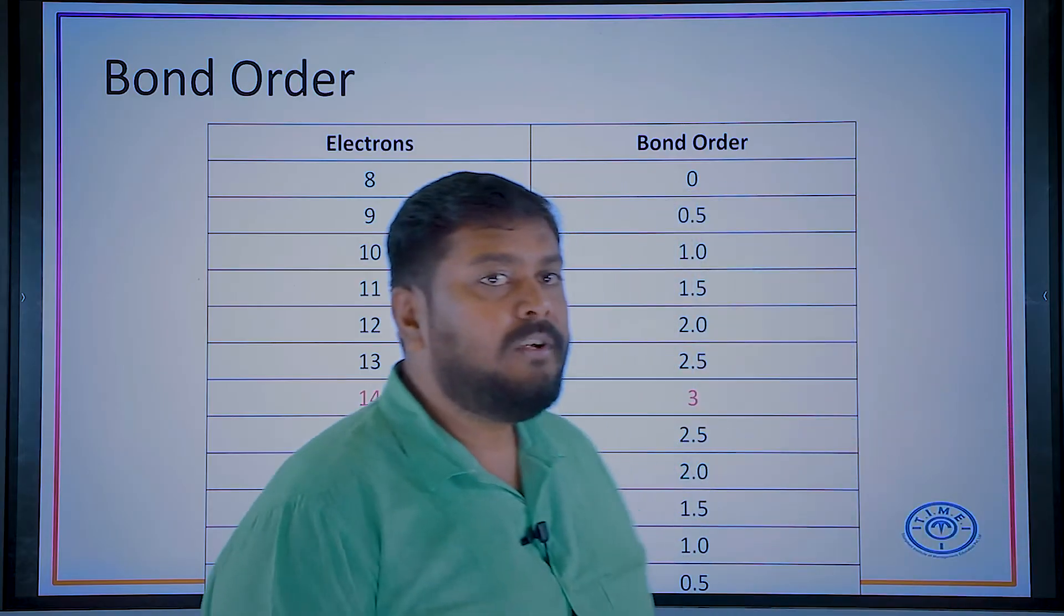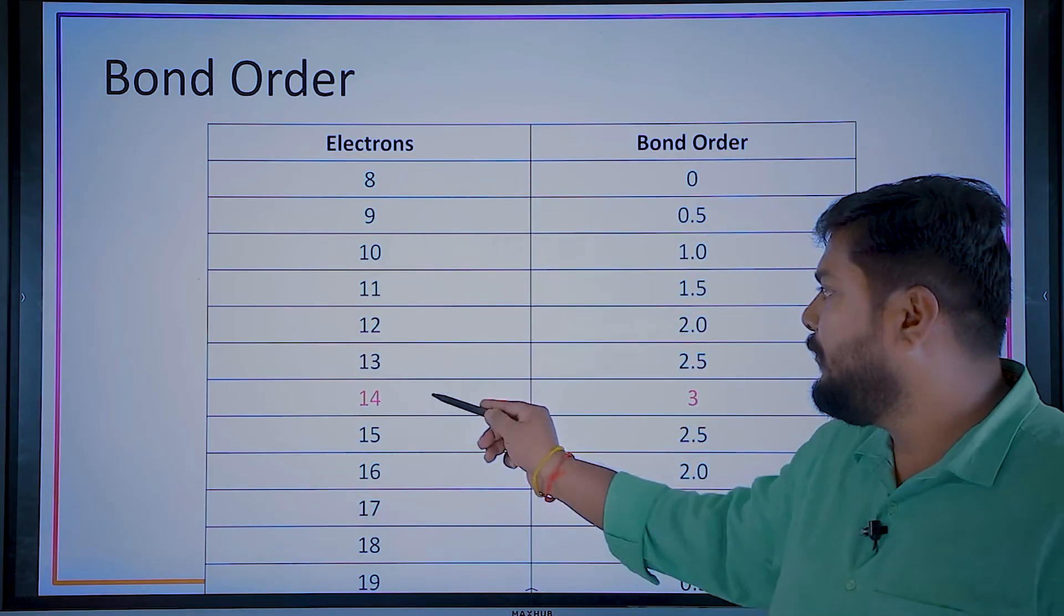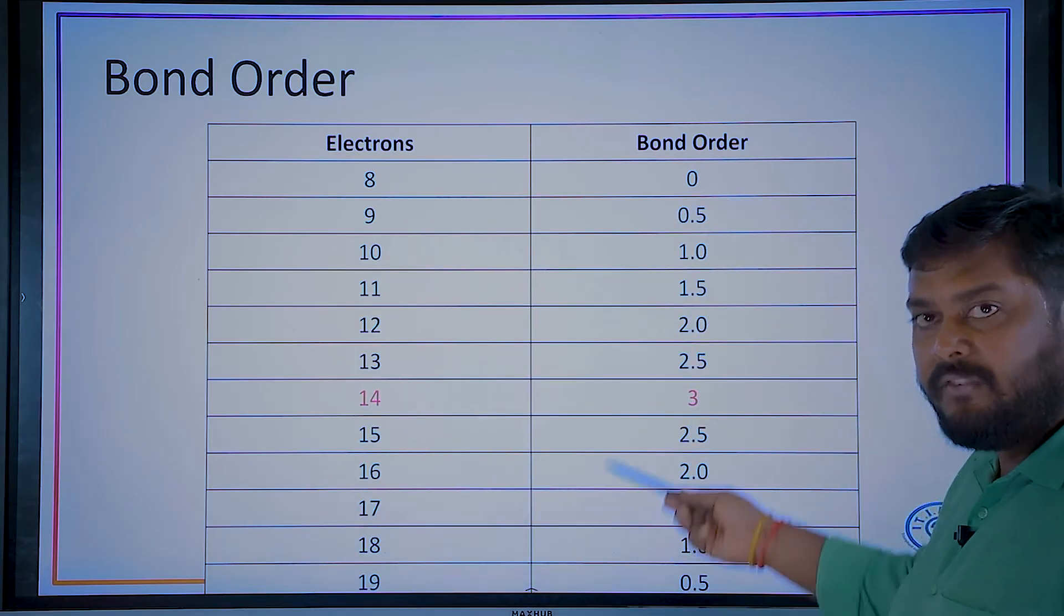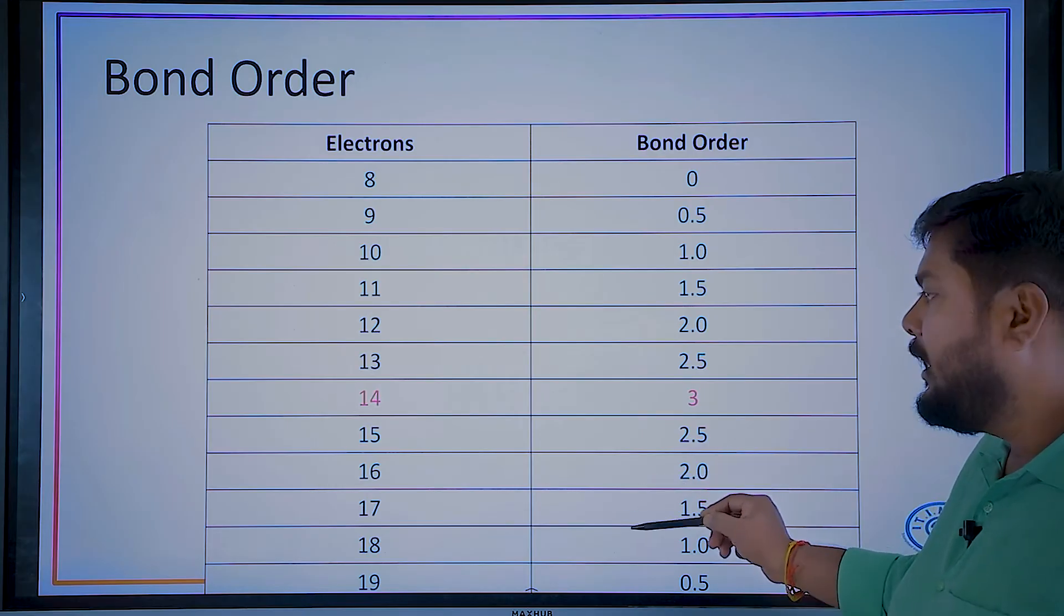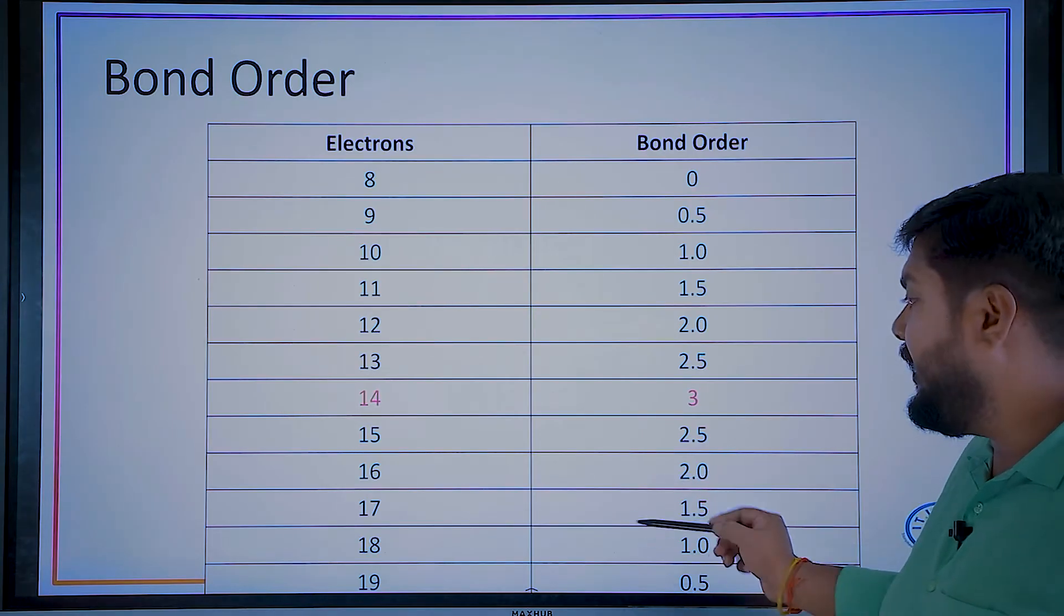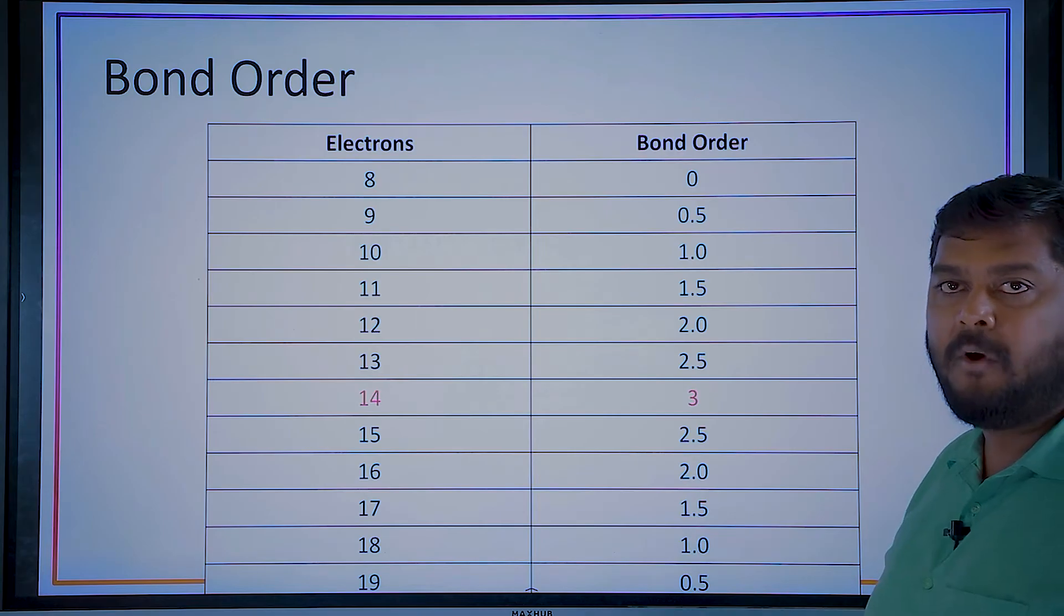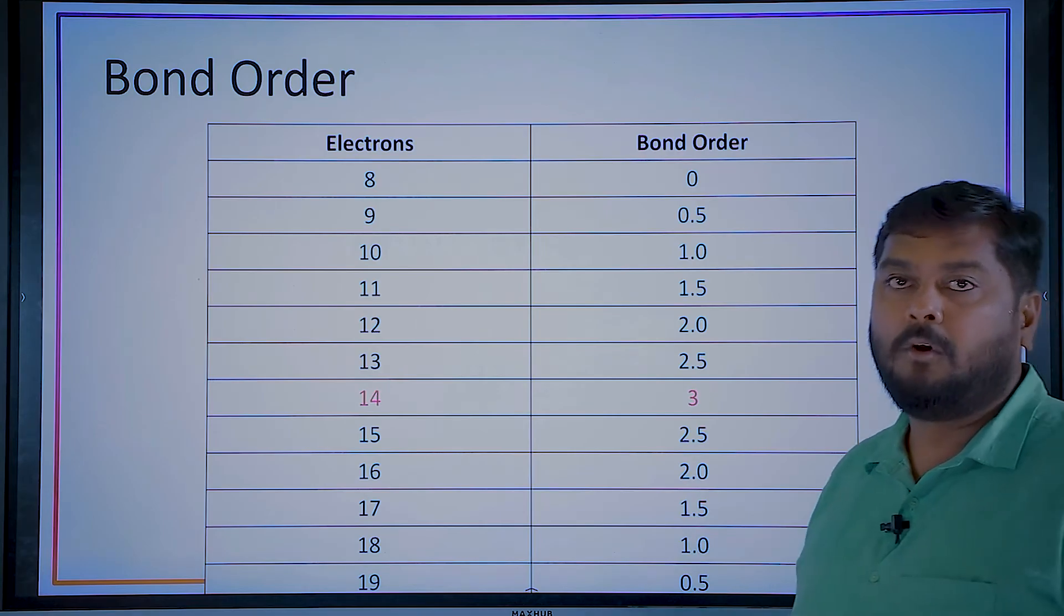Parallelly, if you increase from 14, if 15 electrons, you have to reduce. 15 is 2.5, 16 is 2, 17 is 1.5, 18 is 1, 19 is 0.5, and 20 will have 0 bond order.